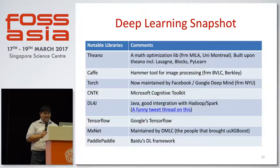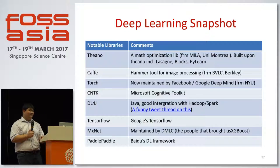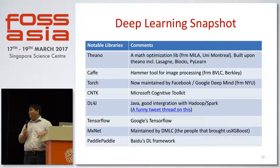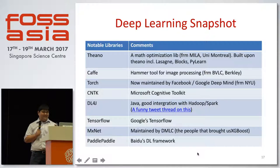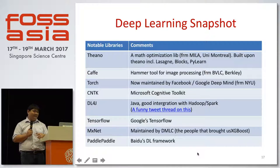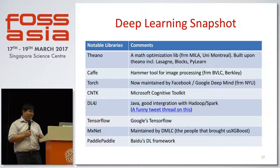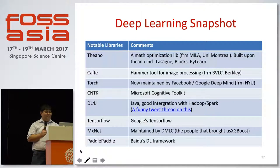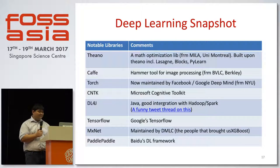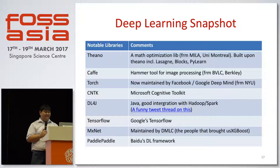The deep learning libraries are all popular and each has big company backers. Google has TensorFlow, Baidu has PaddlePaddle, MXNet is adopted by Amazon, Microsoft has CNTK, and Torch is backed by Facebook or originated from NYU.